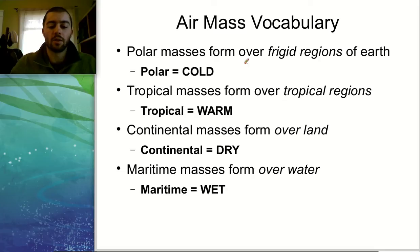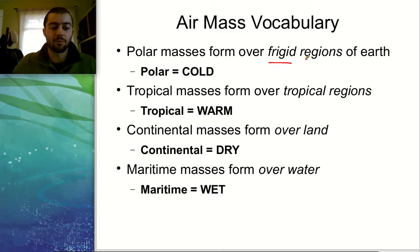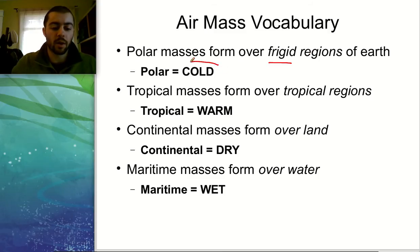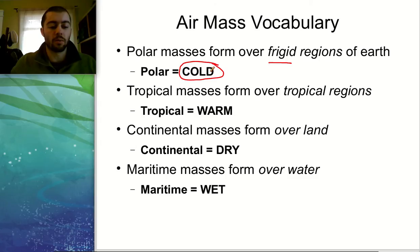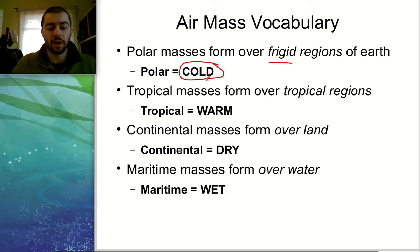Polar air masses form over frigid regions of the earth — we'll look at a map in a moment to see where some of these polar air masses may form. The key word to associate with polar air masses is cold. They're going to form in the very northern or very southern parts of the globe. Polar equals cold — those two words go together.